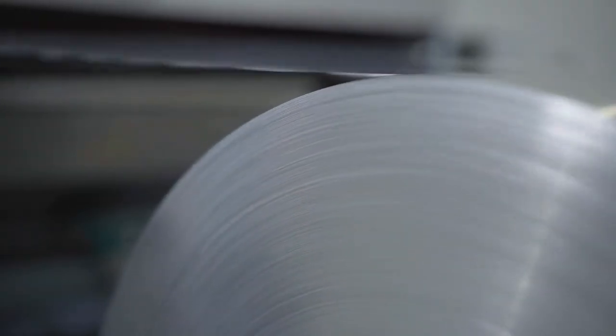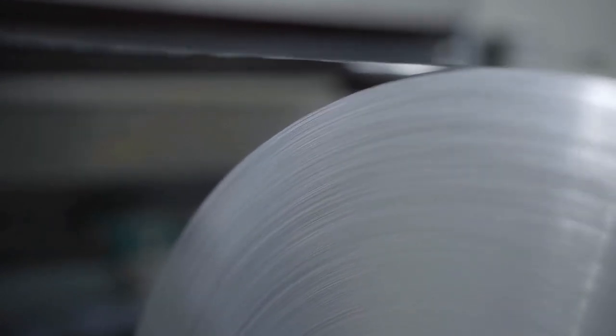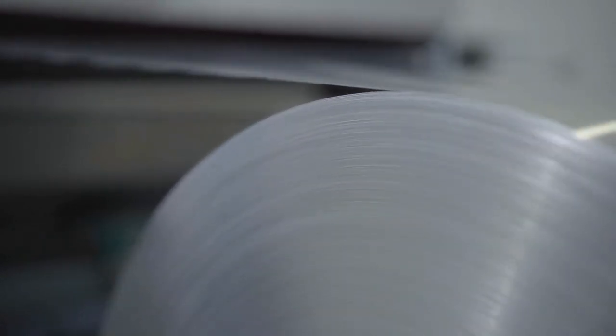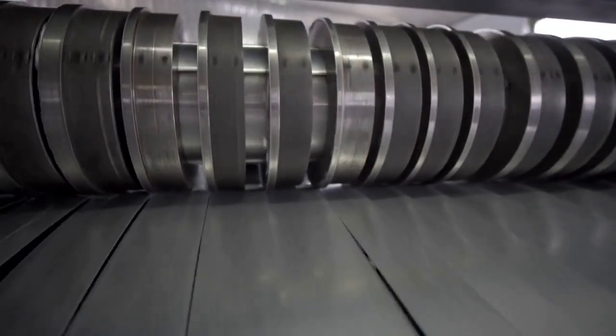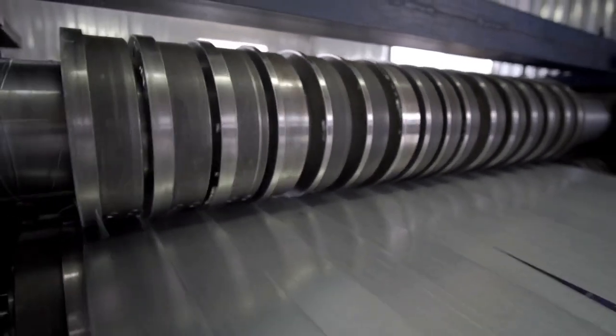The first step in the manufacturing process is to prepare the material that will be used to make the cans. The aluminum is first rolled into thin sheets and then cut into circles that will form the body of the can.